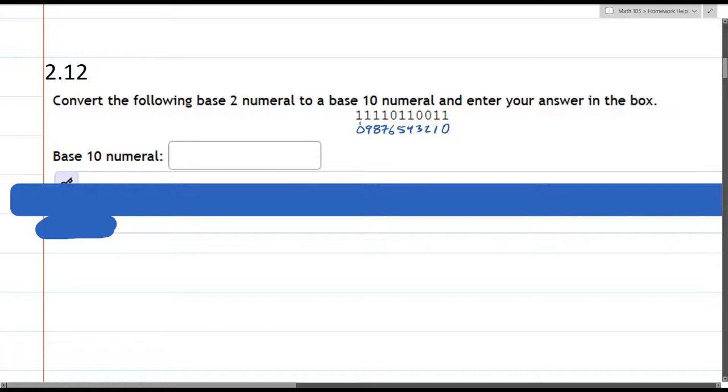So what we're going to do is write out the expanded version. So in this expanded version, we have, let's see, start at the right. So we have 2 to the 0, 2 to the 1st, 2 squared, 2 cubed, 4th, 5th, 6th, 7th, 8th, 9th, 10th.